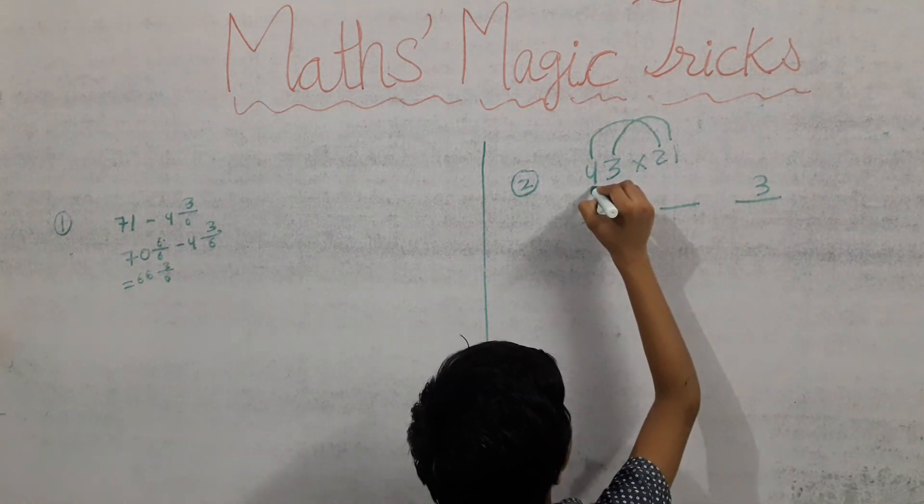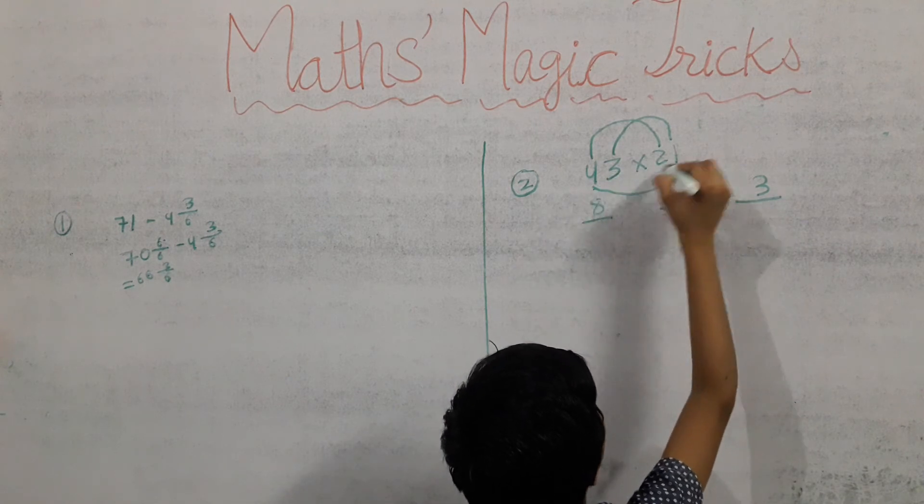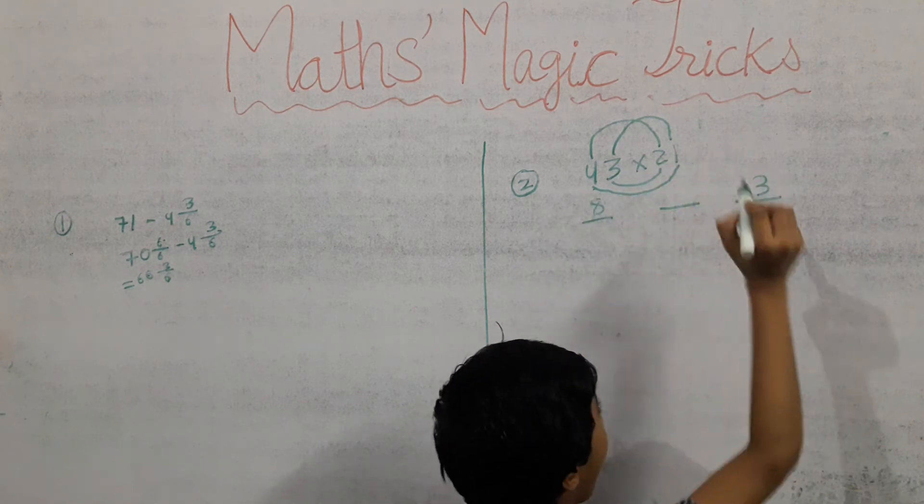Now we have to multiply four with one and three with two, and add these all numbers.